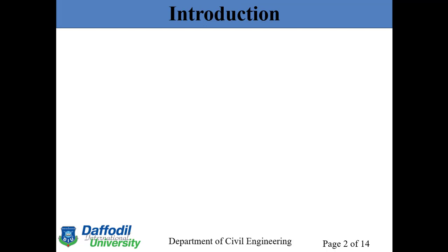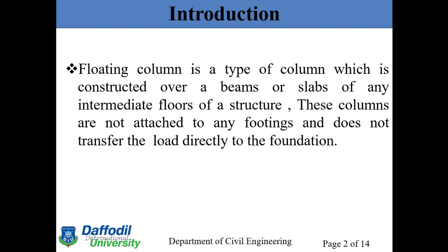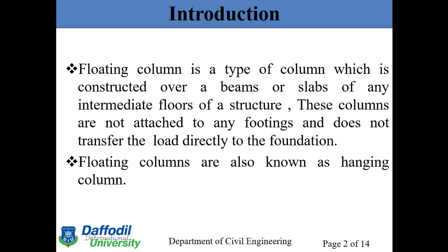A floating column is a type of column which is constructed over a beam or a slab of any intermediate floor of a structure. These columns are not attached to any footing and do not transfer the load directly to the foundation, because they are supported by the beam or a slab. Floating columns are also known as hanging columns.